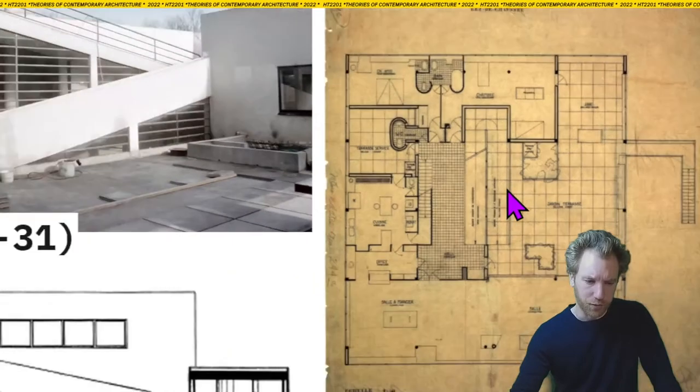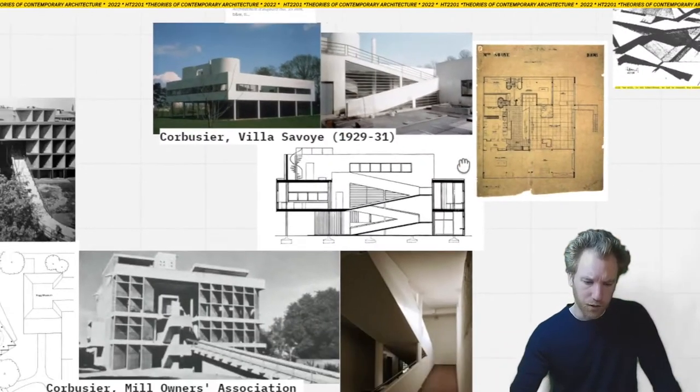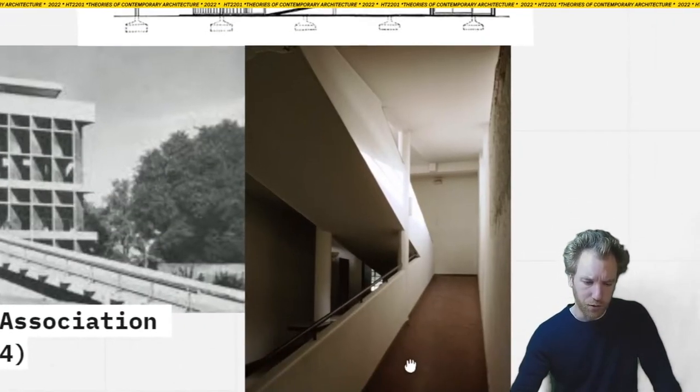The Mill Owners' Association Building in Ahmedabad from the 1950s equally deploys this ramp. Earlier and more famously, the Villa Savoye is defined internally — as you can see in section — by a ramp that slopes up from the ground floor onto the garden terrace and roof, very centrally placed in the plan of the building, producing a navigatory scheme.